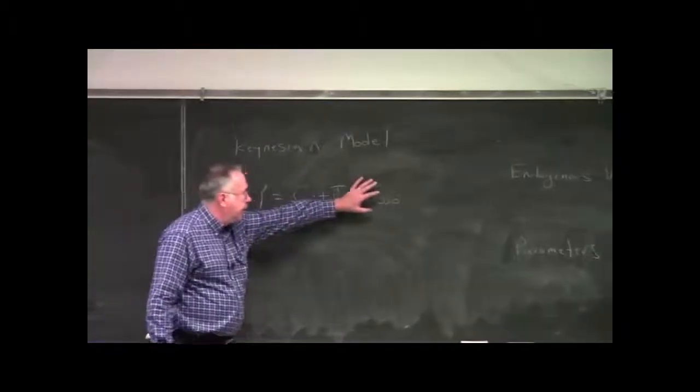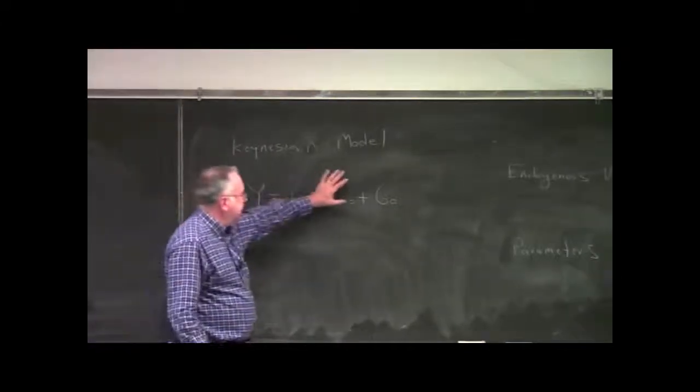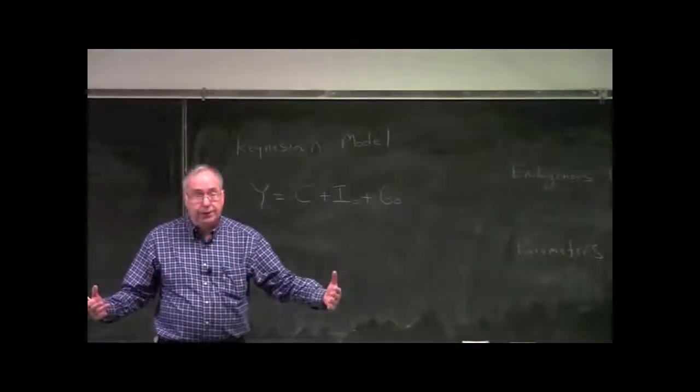This right-hand side, you can think of as being planned expenditures. In equilibrium, planned expenditures will be equal to income. You can also think of this right-hand side, C plus I plus G, as being aggregate demand for goods and services in an economy. So this is our equilibrium condition.